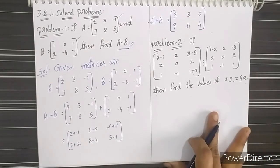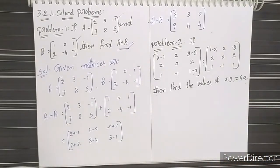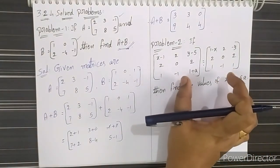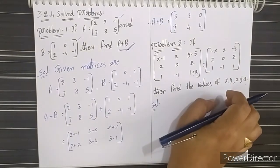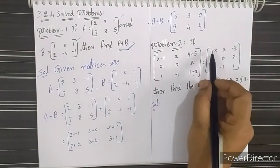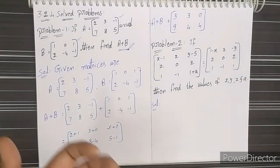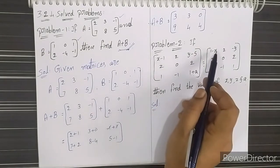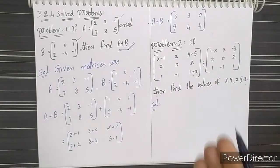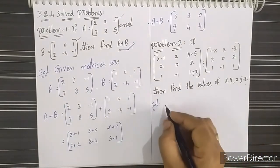In this problem we have to find the unknown values x, y, z, and a. We know that if any two matrices are equal to each other, then their corresponding elements are also equal to each other. So we equate the corresponding unknown elements and solve the resulting equations to find the values.